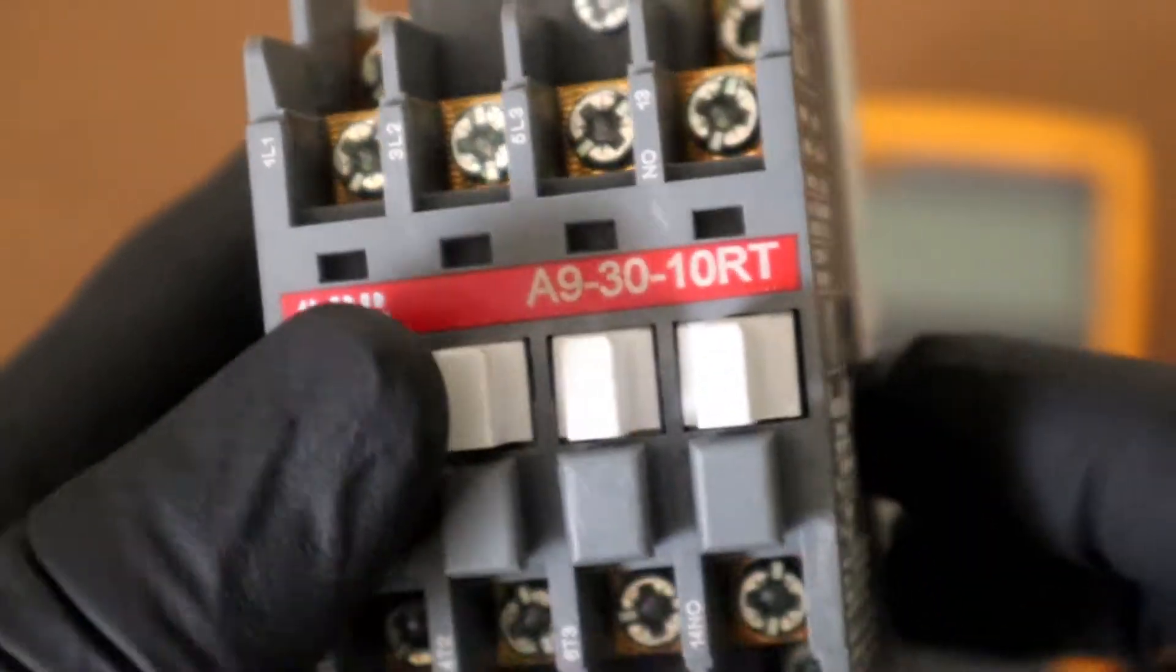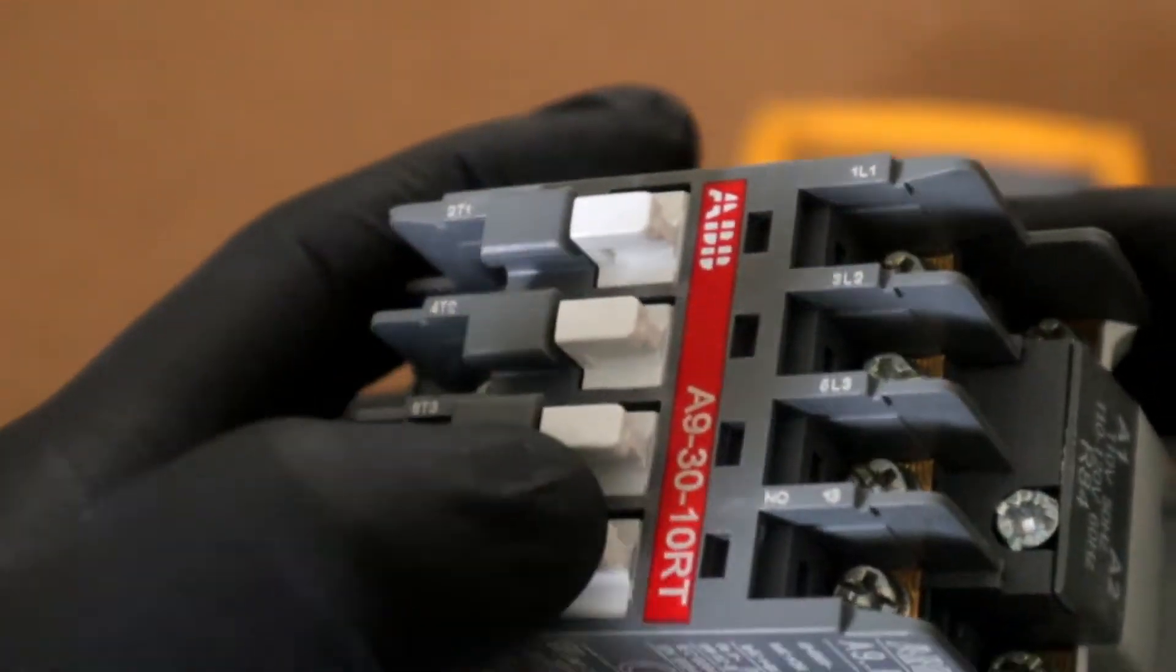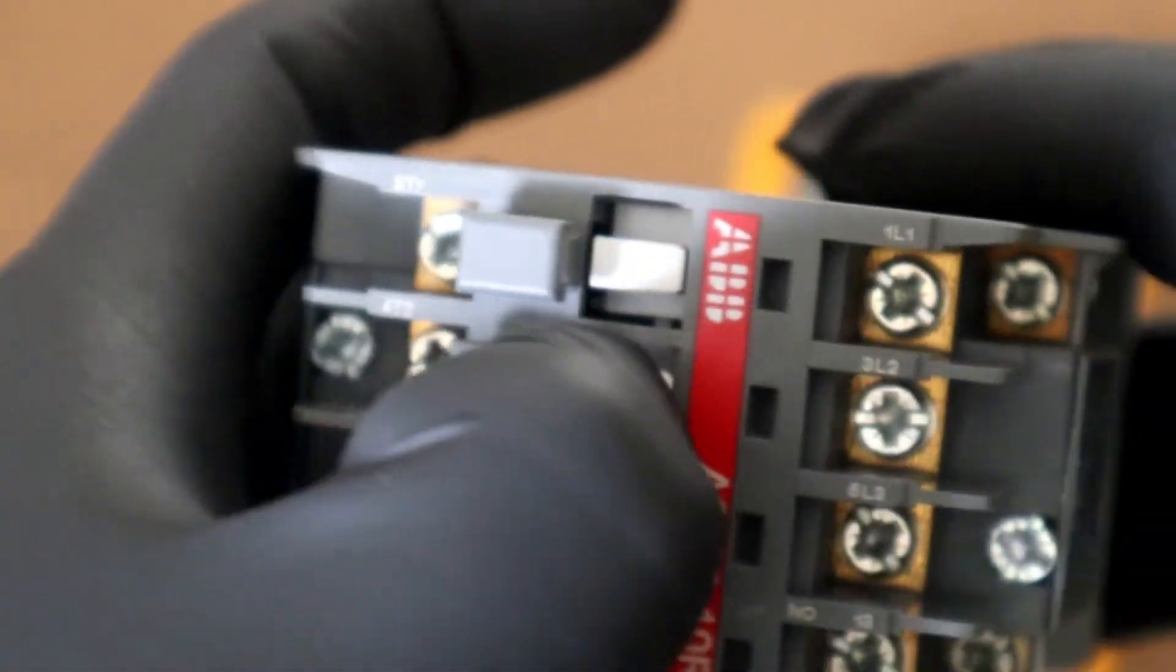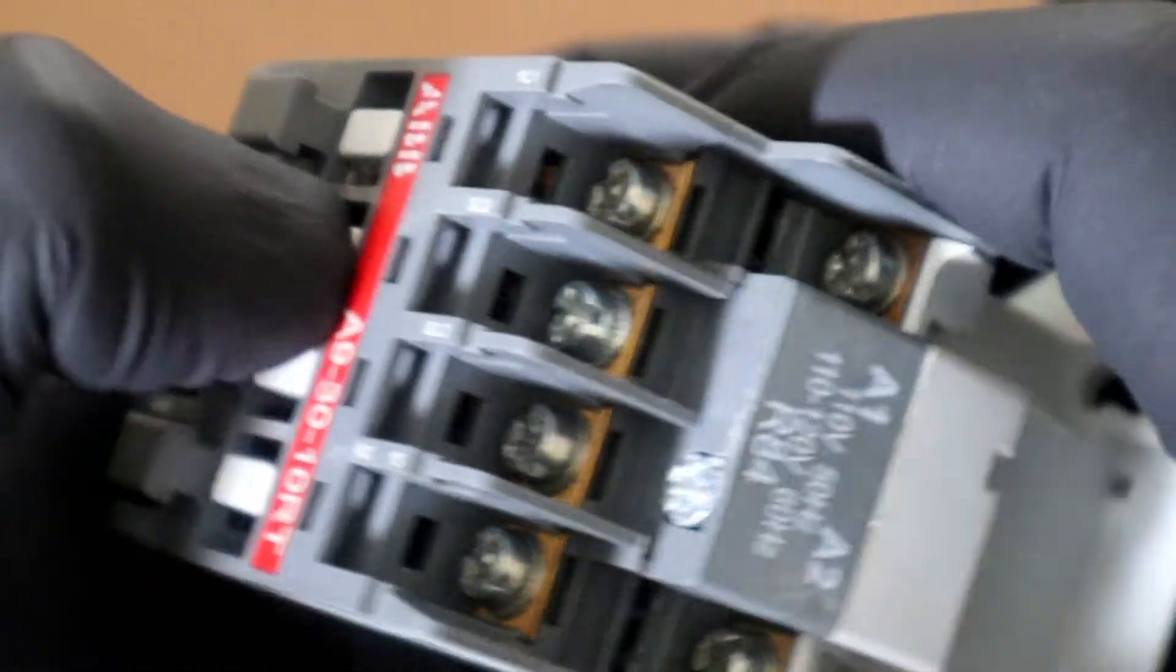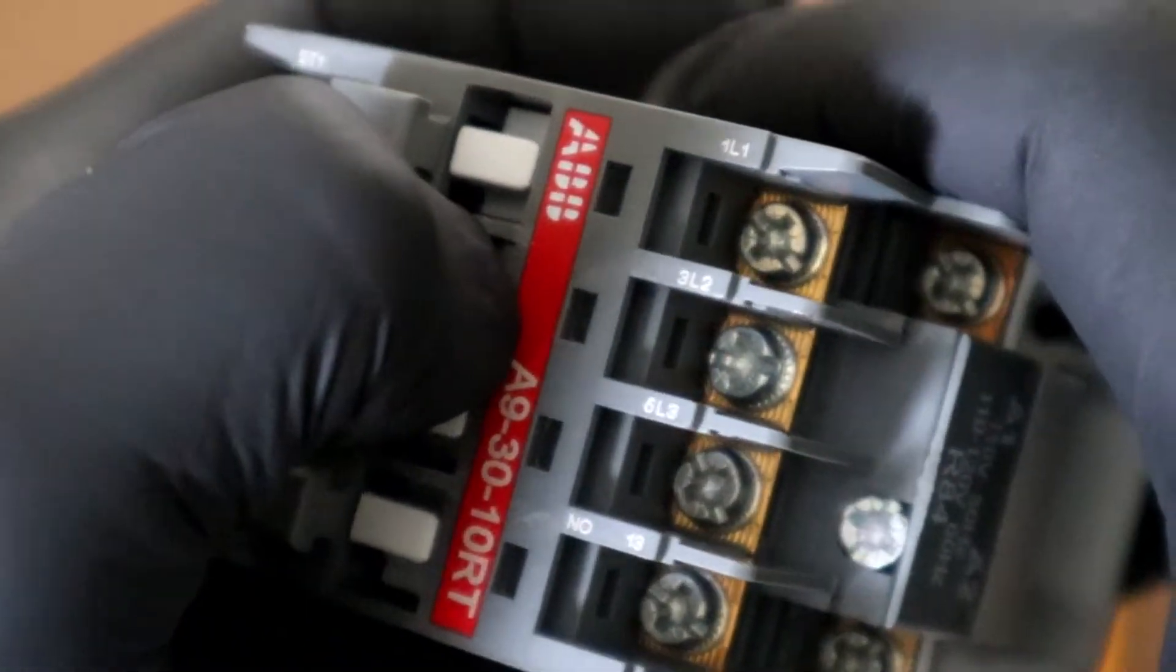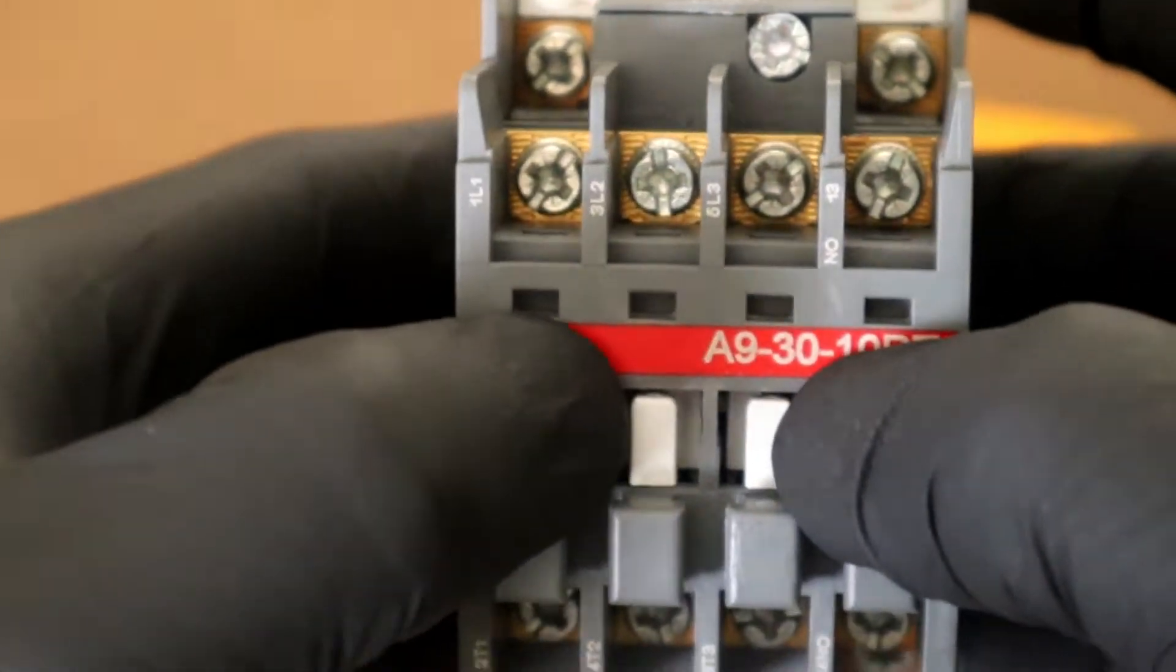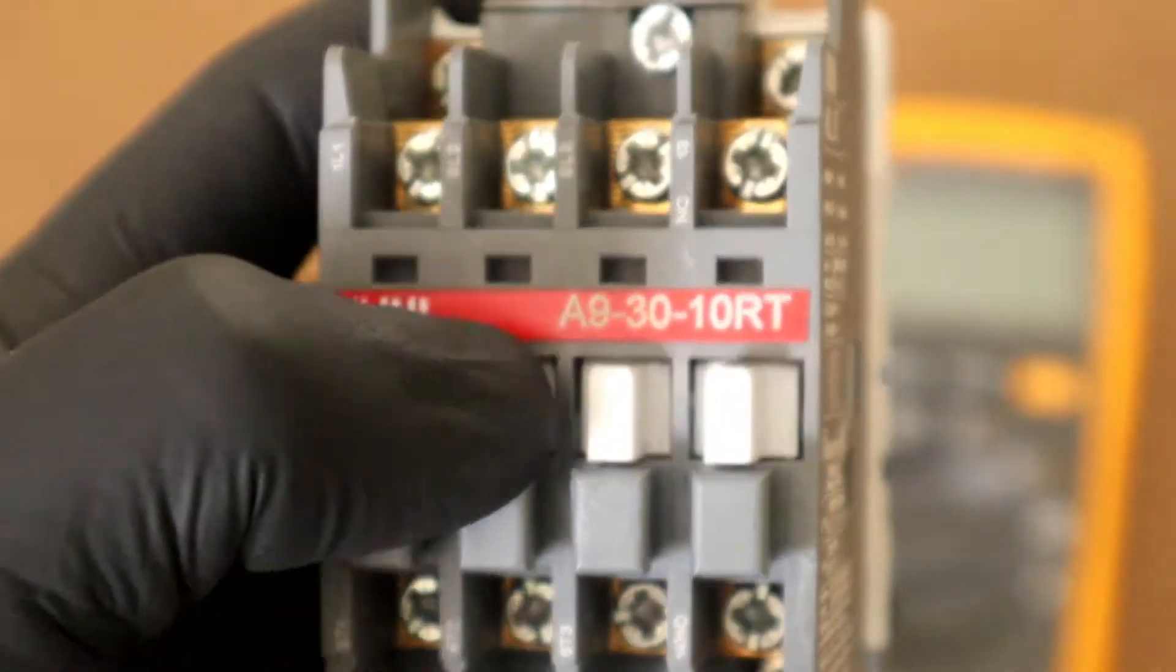Now you can manually operate your contactor by pressing here with your finger. You are simulating a closed position of the contactor. Releasing it, it's an open position of your contactor contact points.